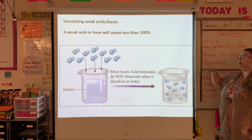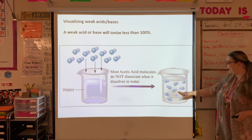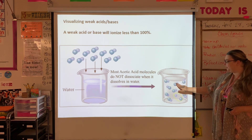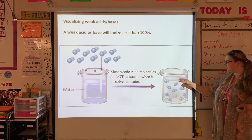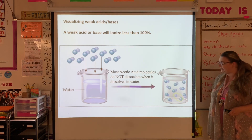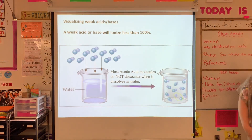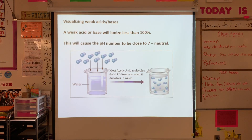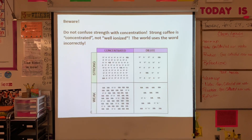Remembering our electrolytes — we don't have very many charged particles that are freely moving. We have charged particles, but they're stuck together, so they aren't going to be able to pass an electric current. Only the freely moving ions will conduct electric current. This causes our pH number to be closer to seven, closer to neutral, because we don't have as many H+ ions. So we're ionizing less than 100% here.